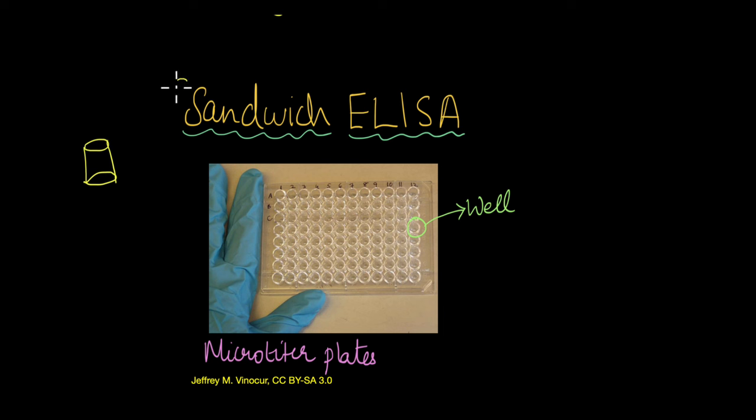But first off, what is this sandwich? So picture a sandwich. How does a sandwich look like? It has a piece of bread, a slice of bread, below which there are going to be some vegetables, and below that vegetables we're going to have another piece of bread. So keep this structure of the sandwich in mind when we talk about sandwich ELISA.